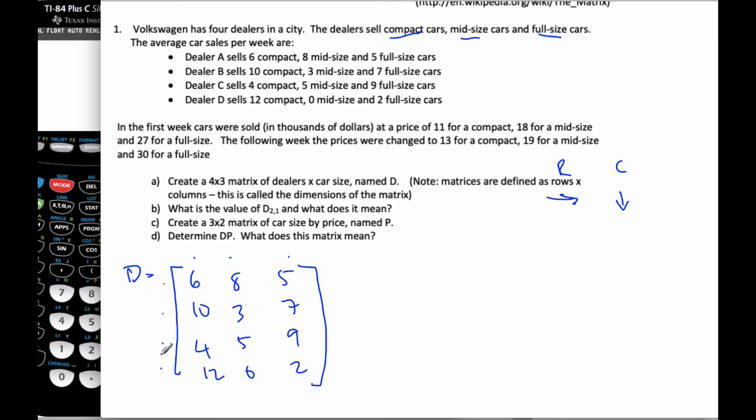So here is my matrix. I can have square brackets or round brackets, it doesn't really matter. And this is referring to dealer A, B, C, and D. And we have our compact, our midsize, and our full cars. So it's just a way to make an array of information in an orderly way.